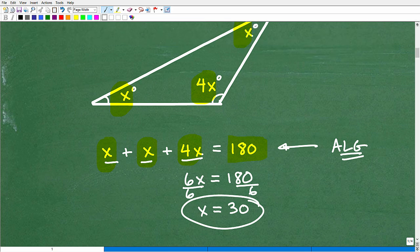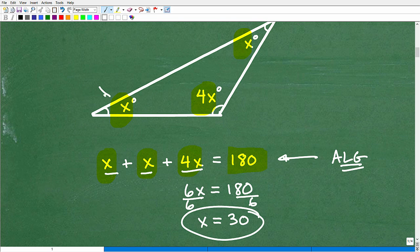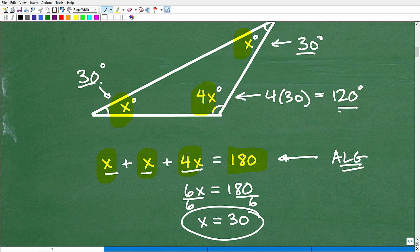But what does that represent? Well, that means this angle is 30 degrees. This angle here, because this is x as well, is 30 degrees. And this one is 4x. So this is 4 times 30, which is 120 degrees. So let's just check this here. 120 plus 30 and 30 is 60. 60 and 120 is 180 degrees. In fact, it is.